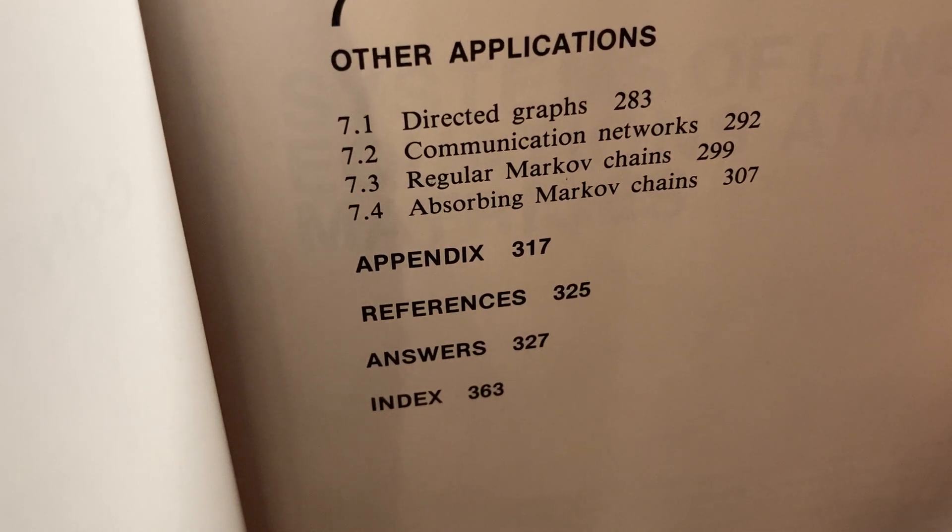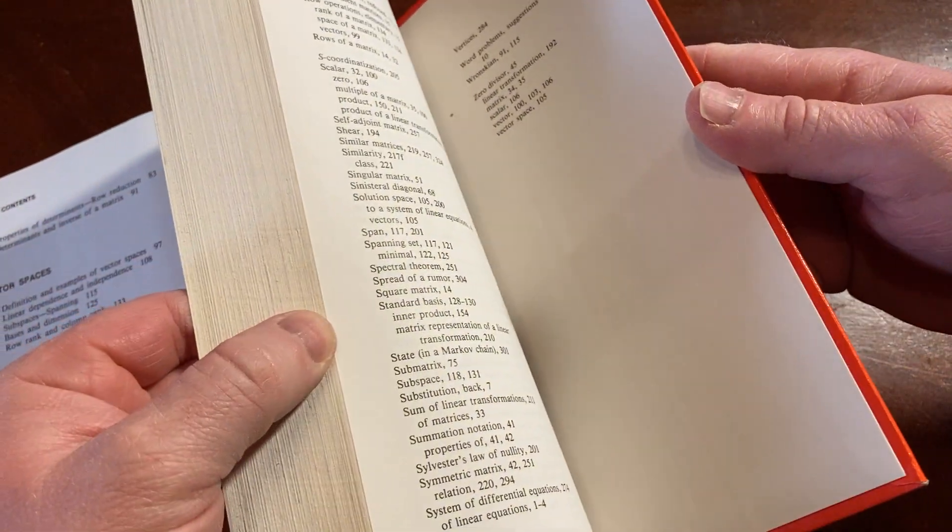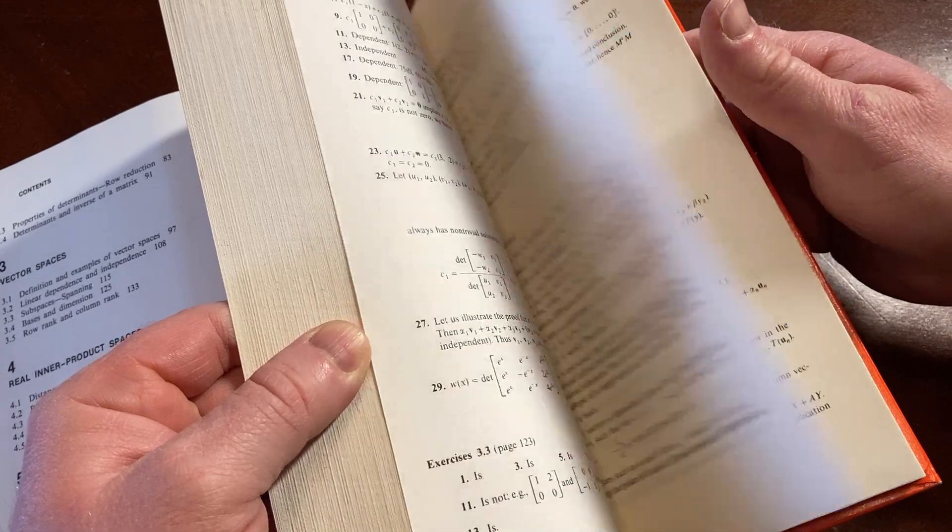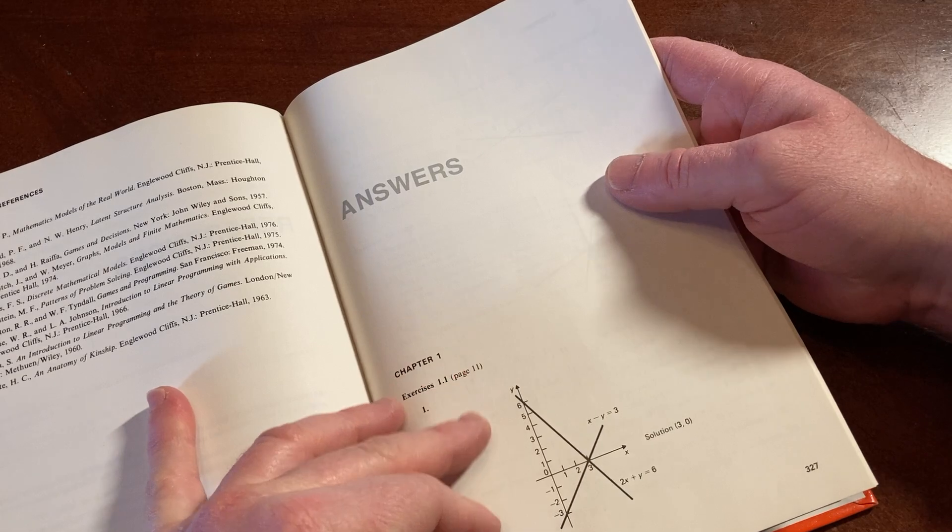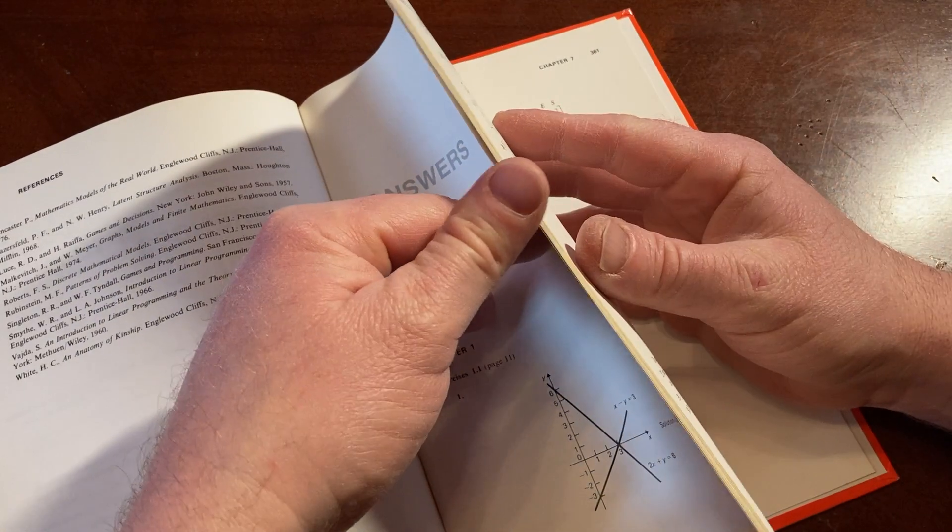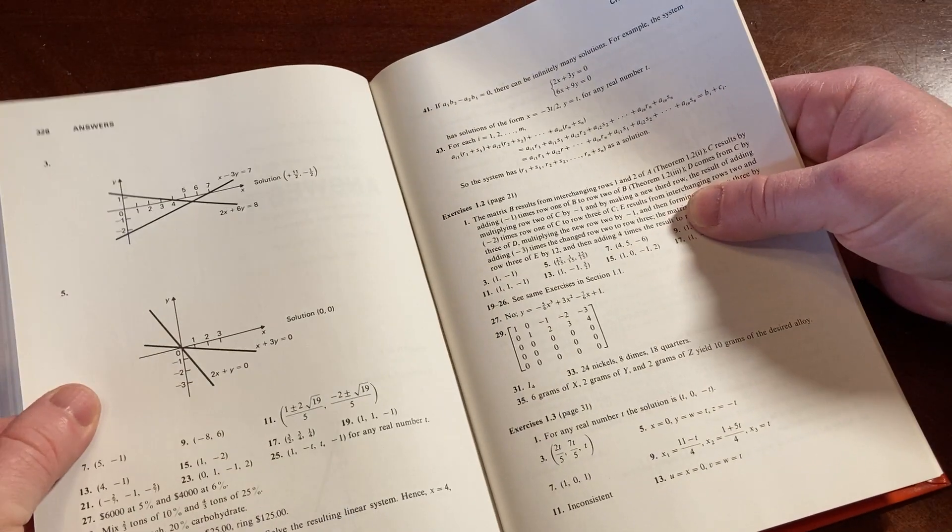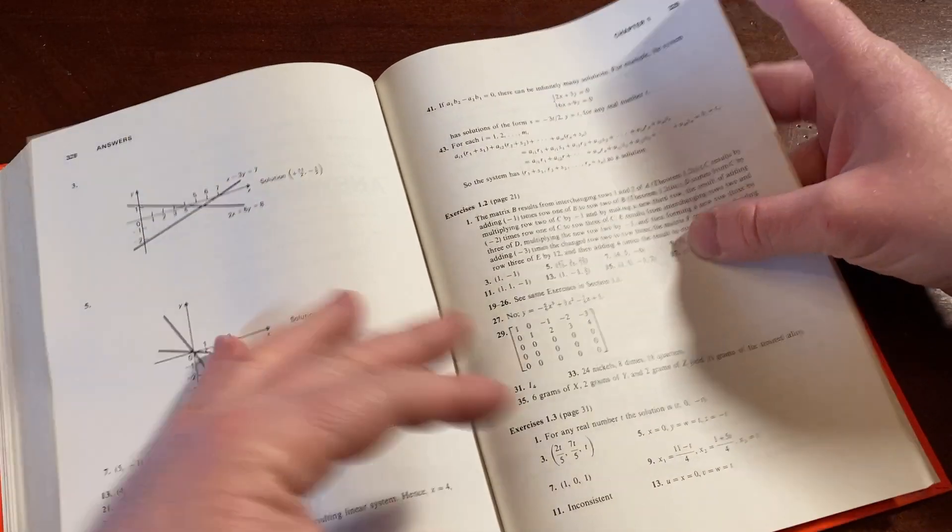Answers, page 327. Let me show you that. So that's one of the good things about this book is that you get answers. And when I mean answers, I mean answers. And if it's a proof, it'll give you something significant or meaningful or helpful. So very nice. So you have it for the odd numbered exercises.